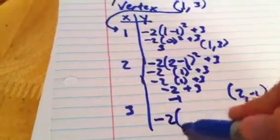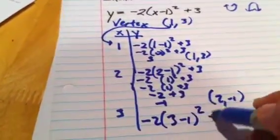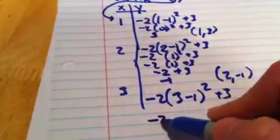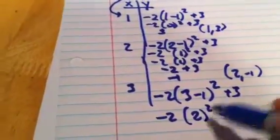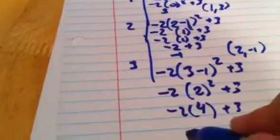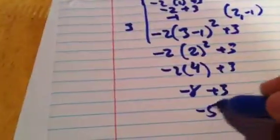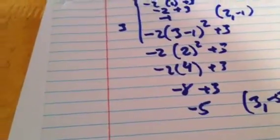So if I plug in the 3, I'm getting negative 2 times 3 minus 1 squared plus 3. So that's 3 minus 1 is 2. 2 squared is 4. 4 times negative 2 is negative 8, plus 3, so negative 5. So I'm getting 3, negative 5.